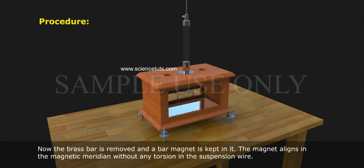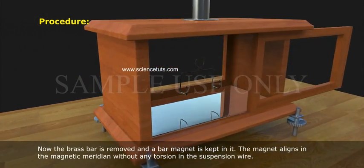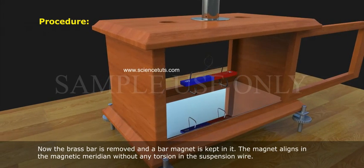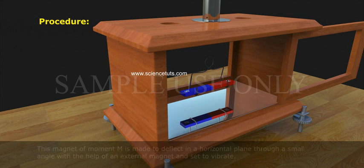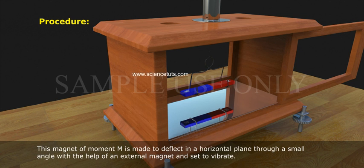Now the brass bar is removed and a bar magnet is kept in it. The magnet aligns in the magnetic meridian without any torsion in the suspension wire. This magnet of moment M